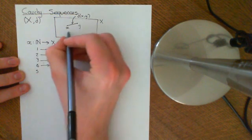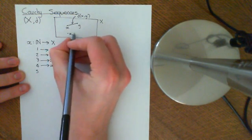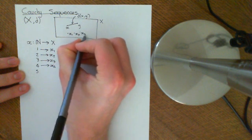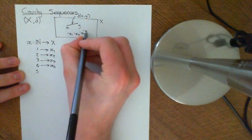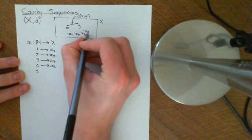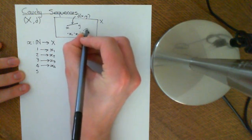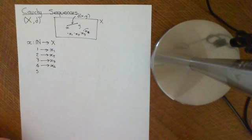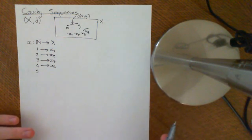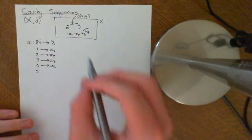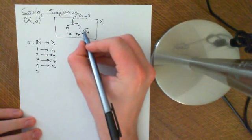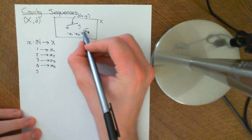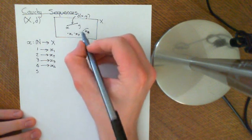So these are all in this metric space: little X1, little X2, little X3, etc. And they might converge onto a limit. We've discussed what it means for them to converge onto a limit. The concept of a Cauchy sequence is slightly different.